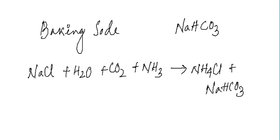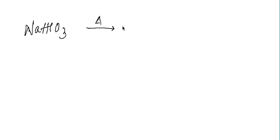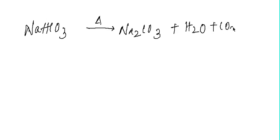Baking soda is added to food for faster cooking, as substances become very soft when it is added. When baking soda is heated, it produces sodium carbonate, water, and carbon dioxide: NaHCO₃ → Na₂CO₃ + H₂O + CO₂.